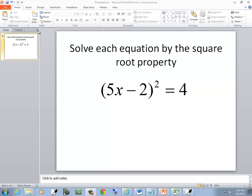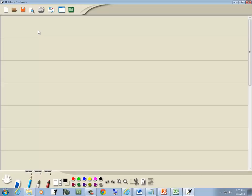I'm going to solve this problem using the square root property. I have 5x minus 2 squared is equal to 4.